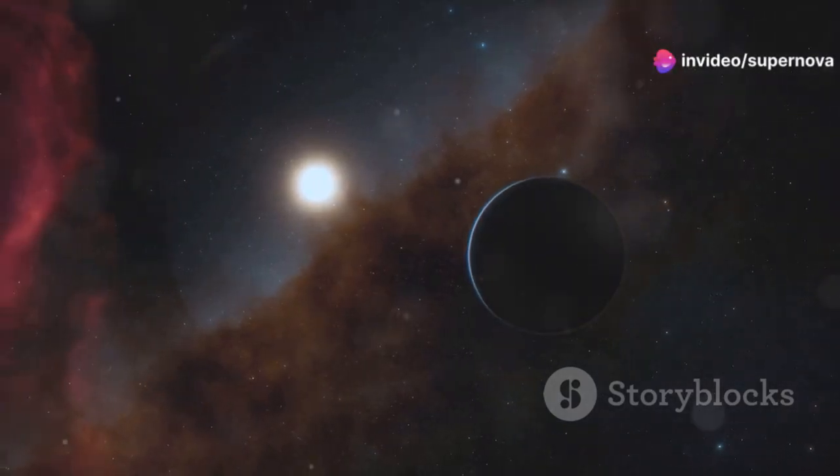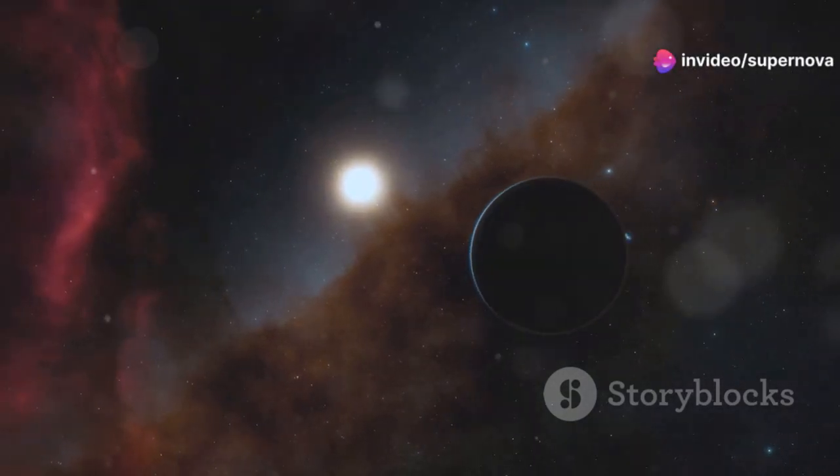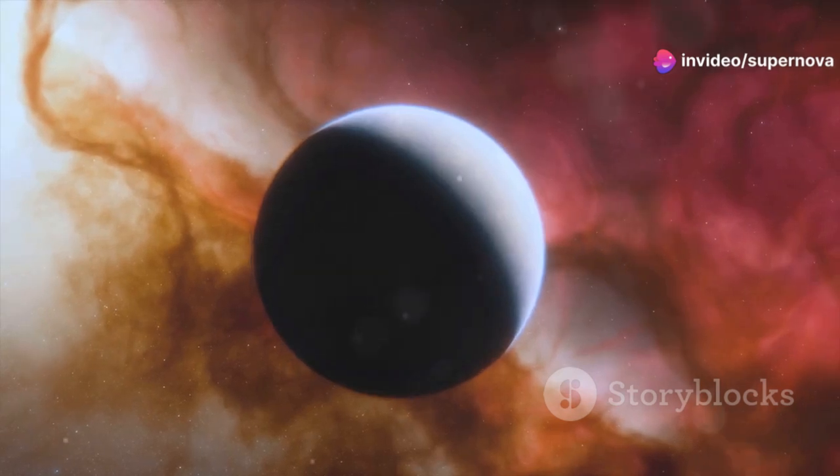Proxima Centauri is part of a triple star system called Alpha Centauri, which includes two other stars, Alpha Centauri A and B. This system is our next-door neighbor in the vastness of space, a mere cosmic hop away. It's only 4.24 light-years away.